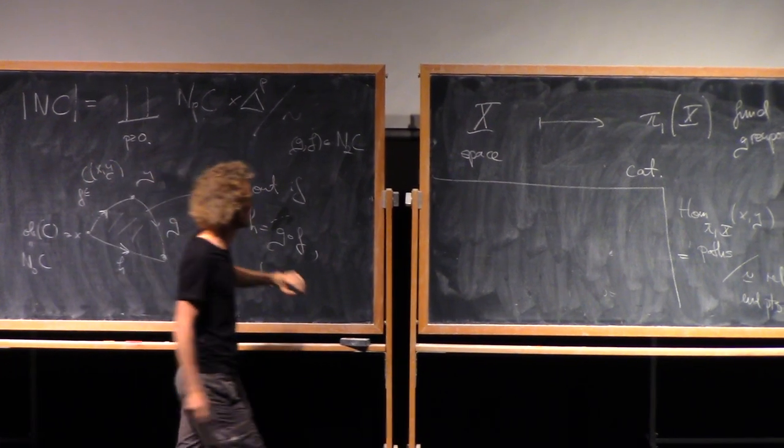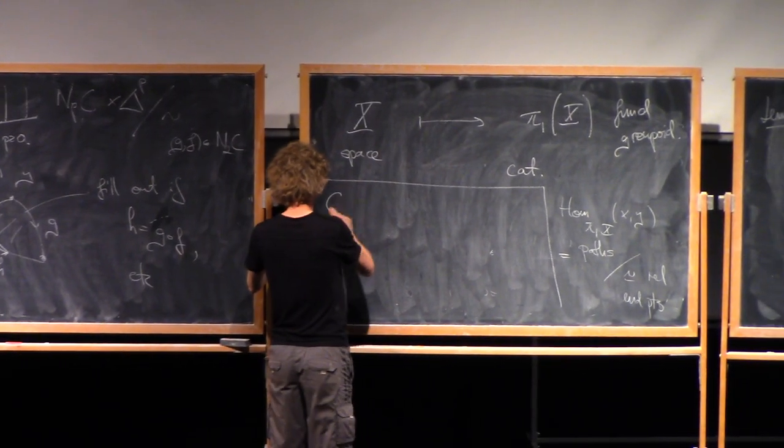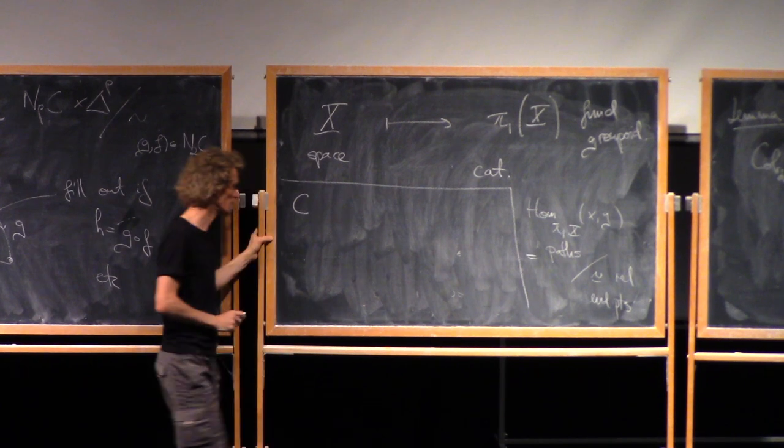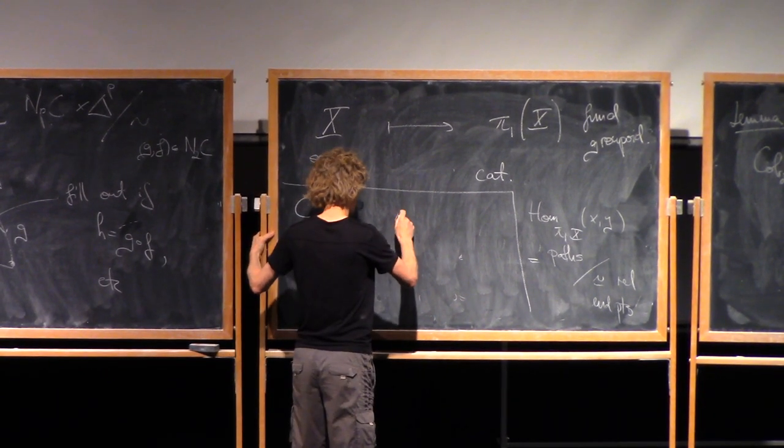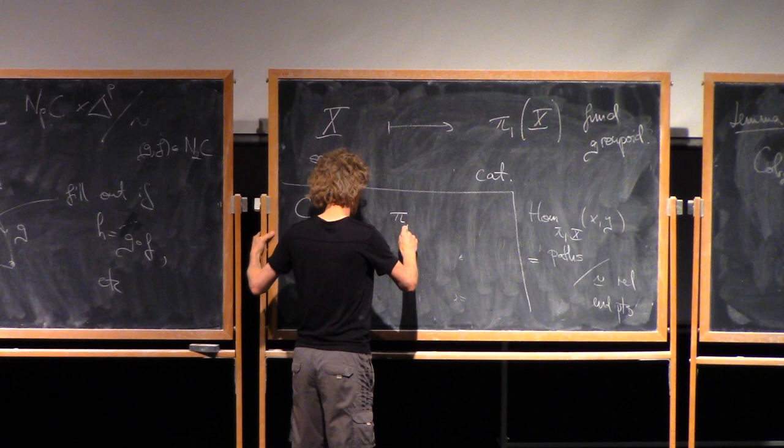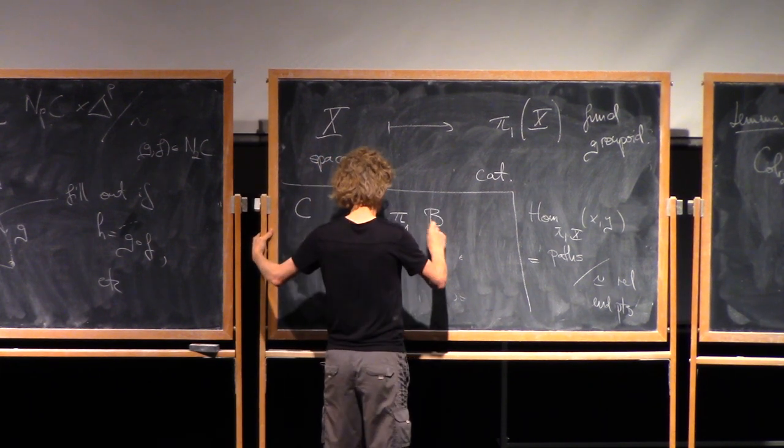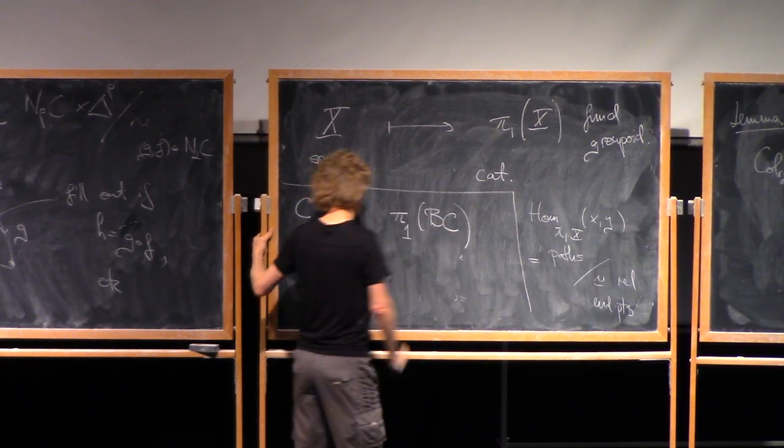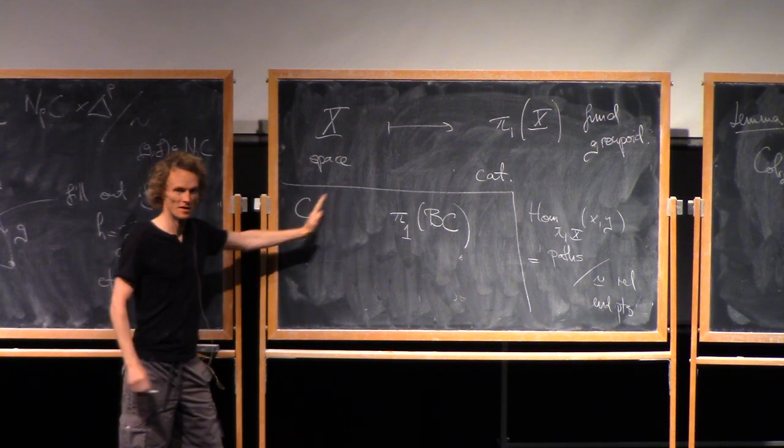I want to consider this as some sort of partial inverse to the other process. Or that kind of point of view would be helpful in these lectures. More precisely, if I start with a small category, turn it into a space, and then take fundamental groupoid of that space, there's a canonical functor from where I started to where I ended.